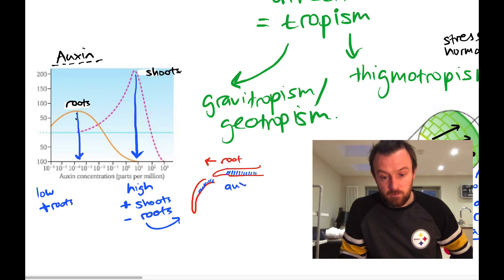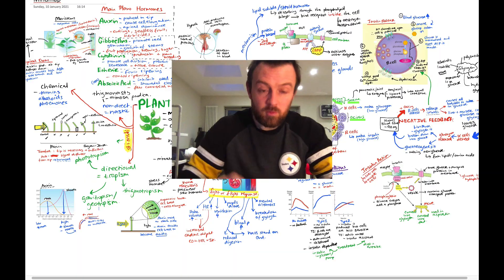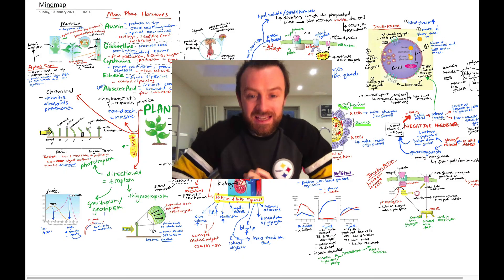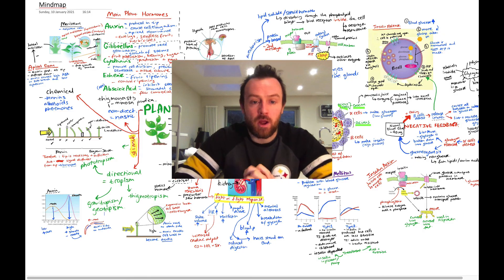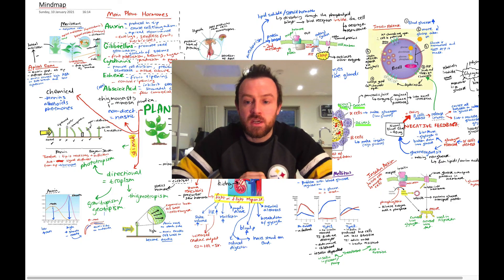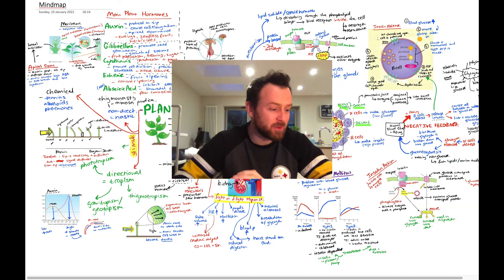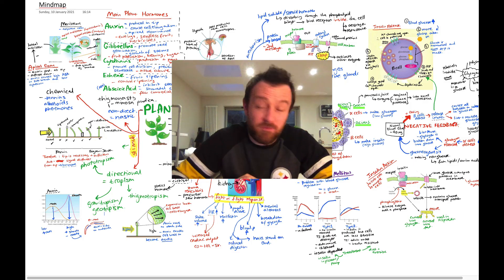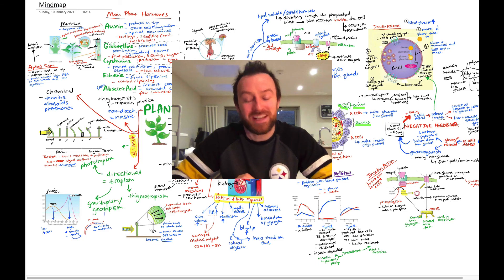That is everything to do with hormones. We've covered animal hormones — the bulk of the content — and plant responses, which is basically about plant hormones, covering OCR A-level Biology modules 5.4 and 5.5. Go over parts of the video as needed, and you can add extra detail especially on the plant hormones. Thanks for watching.